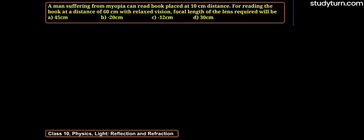A man suffering from myopia can read a book placed at 10 cm distance. For reading the book at a distance of 60 cm with relaxed vision, focal length of the lens required will be